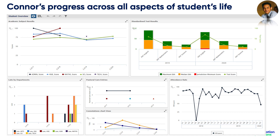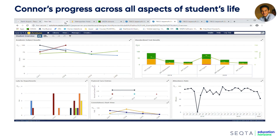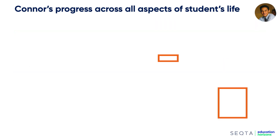Taking this one step further, this dashboard shows an individual student's progress across a range of different areas: academic subject results, standardized testing, late to class, pastoral well-being entries, and attendance rate. All of that is at the teacher's fingertips and all they have to do is filter child by child.